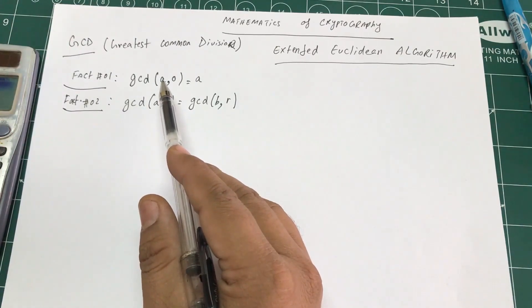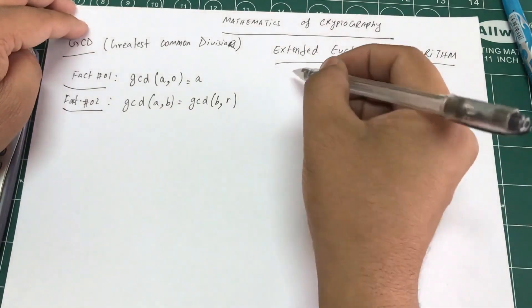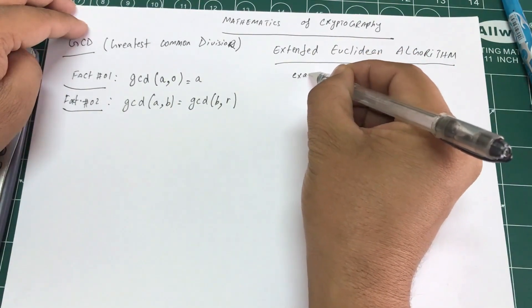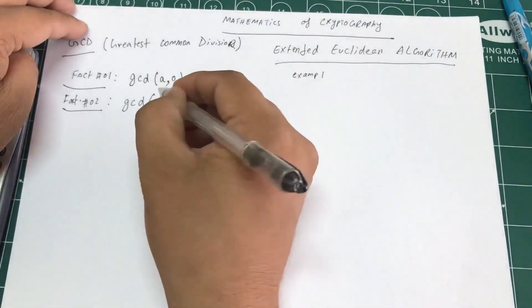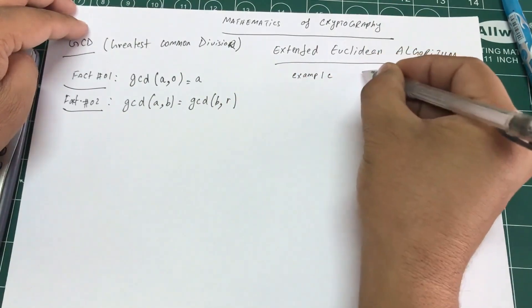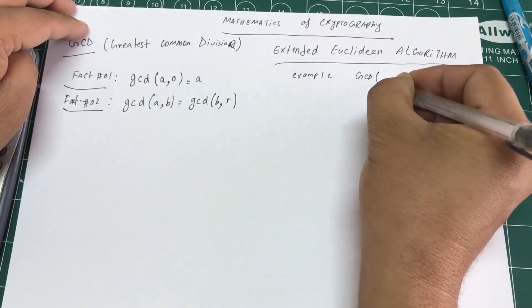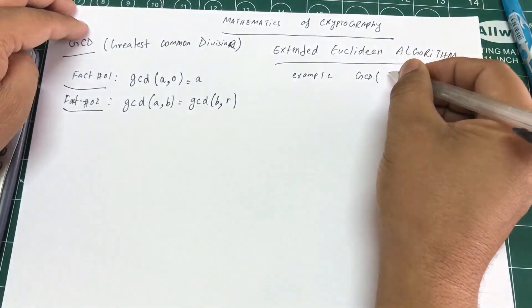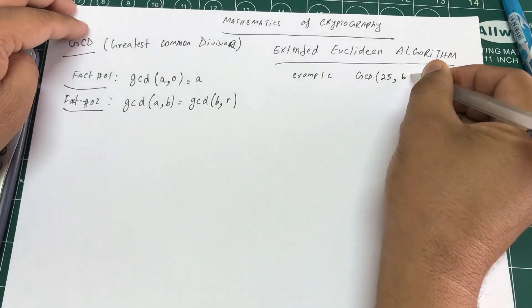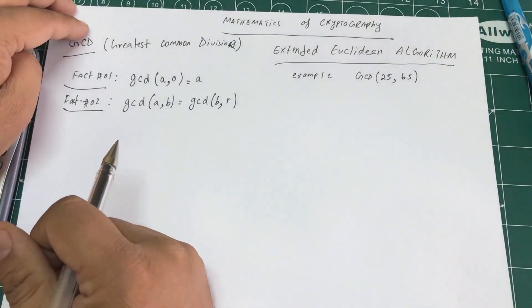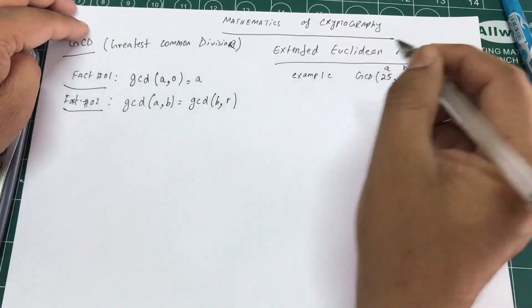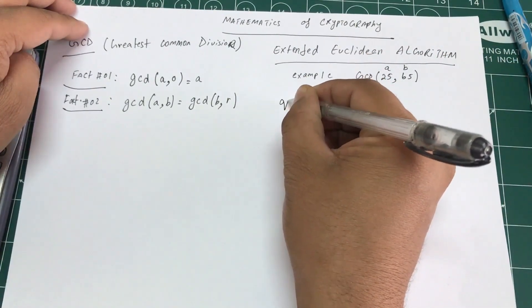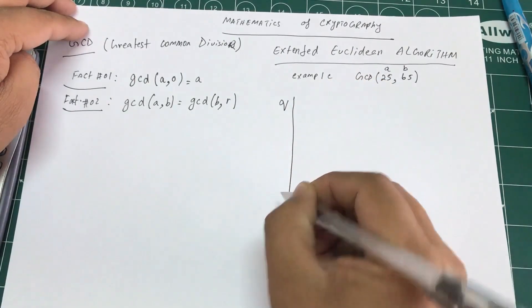Let's do a simple example using the Euclidean algorithm. We want to find the GCD of 25 and 65. We'll set up columns for A, B, and the remainder.